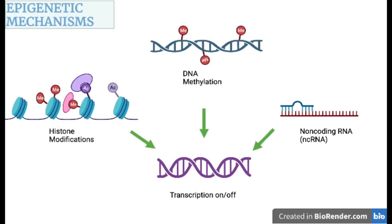There are three main epigenetic mechanisms that we know of today. The first being histone modification, which can be in the form of acetylation or methylation and others. Then there's DNA methylation and non-coding RNAs. All these epigenetic mechanisms result in turning off or on of transcription, which controls your gene expression — your genes need to be transcribed to form messenger RNA, which leads to the formation of proteins.